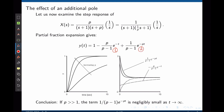Plotting the two terms separately — the contribution from the pole at -1 (dashed) and the contribution from the pole at -p (solid) — and varying p, we see: as p increases, the exponential from the pole at -p decays faster and its magnitude also decreases. When p is very large, the magnitude of the second term tends to zero and the associated exponential decays very fast.